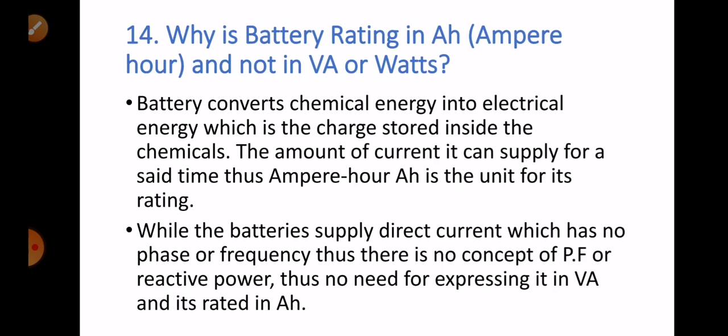Question number fourteen: why is battery rating in ampere-hours, not in kVA or watts? There are two major reasons. First, a battery converts chemical energy into electrical energy — the charge stored in the chemicals determines the amount of current it can supply for a set time, which is why ampere-hour is the unit of battery. Second, batteries supply direct current, which has no phase or frequency. Thus there is no concept of power factor or reactive power, so there is no need to express it in kVA.